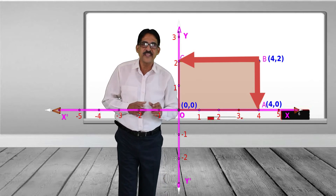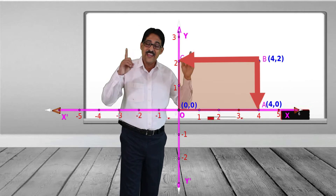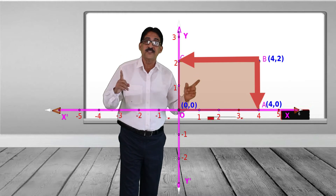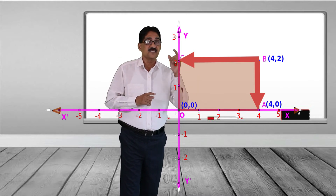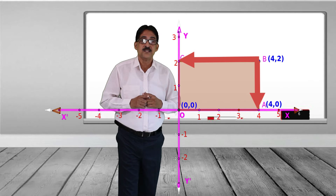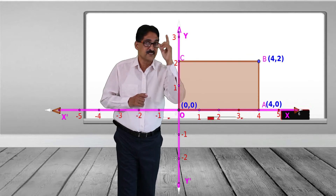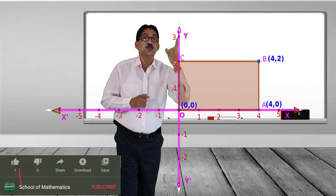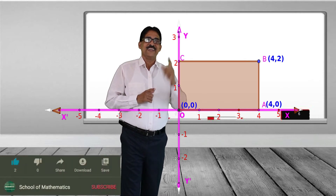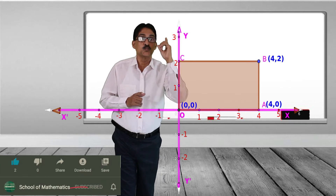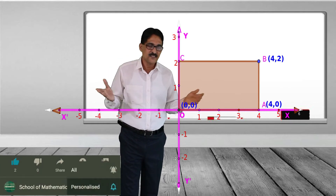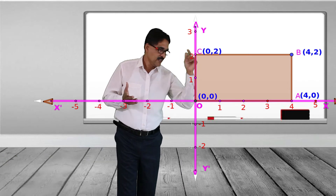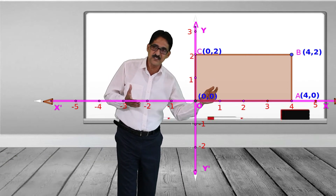Now find the coordinate of C. The point C is on the y-axis. Every point on the y-axis has its x-coordinate equal to 0. Therefore the coordinate of C is (0, 2).